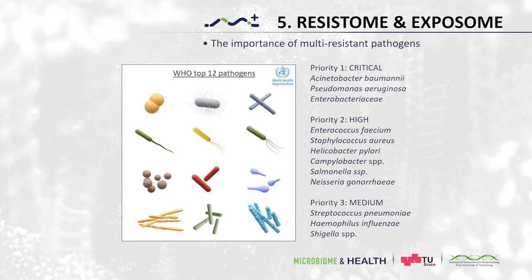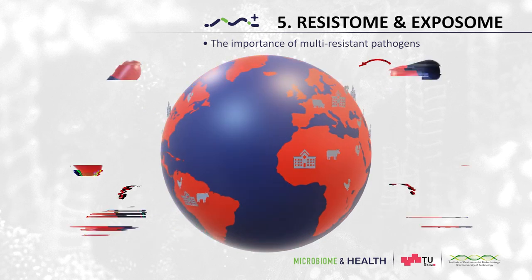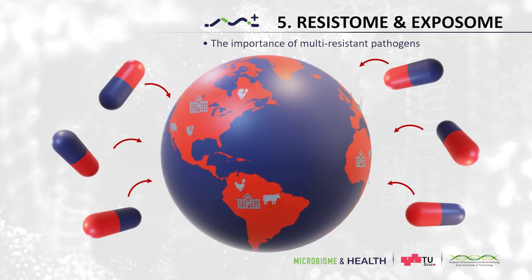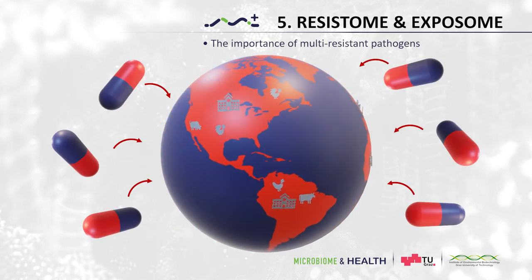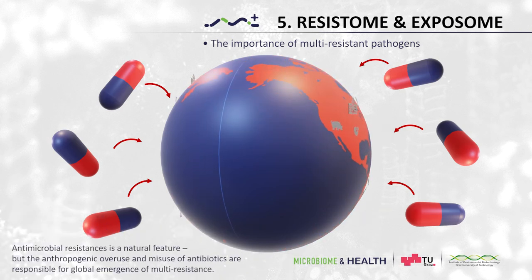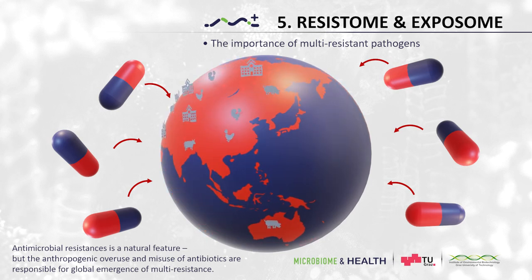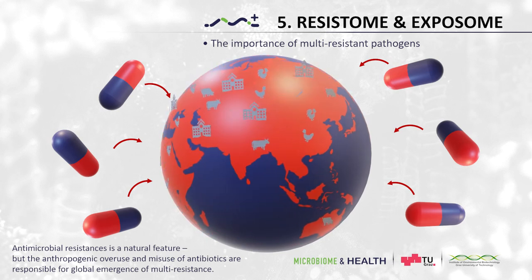In order to develop sustainable and long-lasting countermeasures, it is important to understand where and why antimicrobial resistances develop. Antimicrobial resistances can naturally occur in the environment, which will be discussed in more detail in the next chapter. However, the anthropogenic overuse as well as the misuse of antibiotics are the main reason why many multi-resistant pathogens are on the rise.